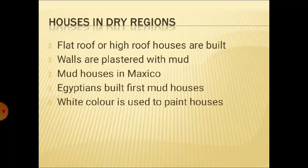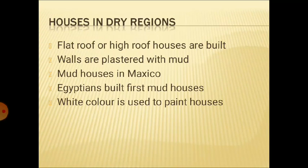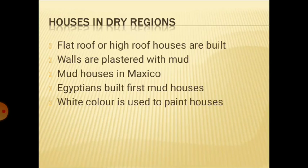What kind of houses are made in dry regions? In hot and dry areas, houses are built with flat roofs, and they plaster their house walls with mud. Mud houses keep the house cool from inside. Mud houses are constructed in Mexico, and Egyptians were the first who built mud houses. They also paint their houses white, because white color reflects the heat of the sun and keeps the house cool from inside.